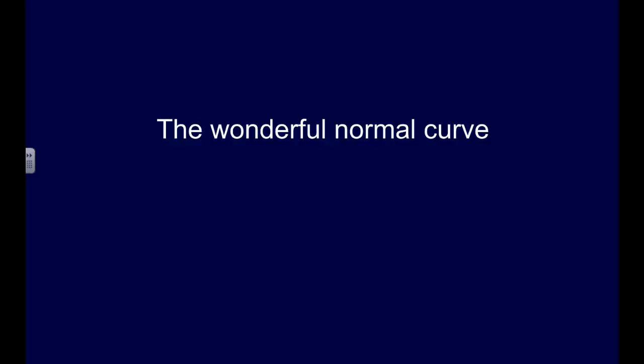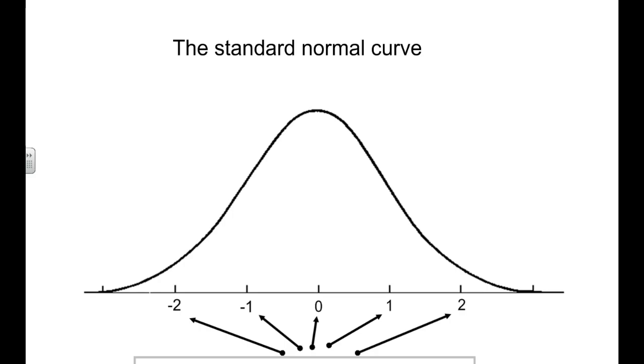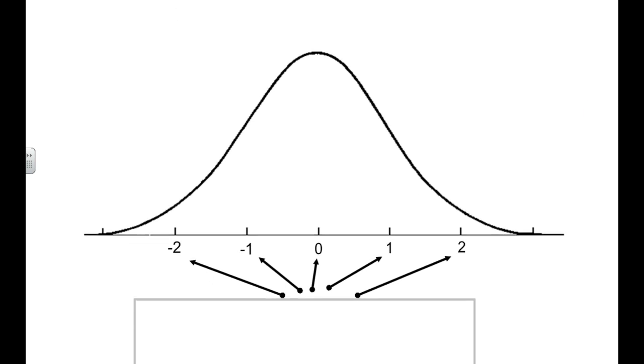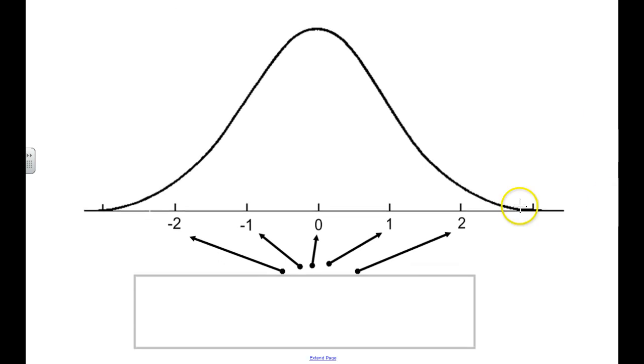Let's get into the details of the wonderful, ever-present normal curve. The standard normal curve looks like this bell shape that we're pretty used to here. And what you'll often see here is these numbers labeled on the bottom. And we always have 0 in the middle on the standard normal curve.